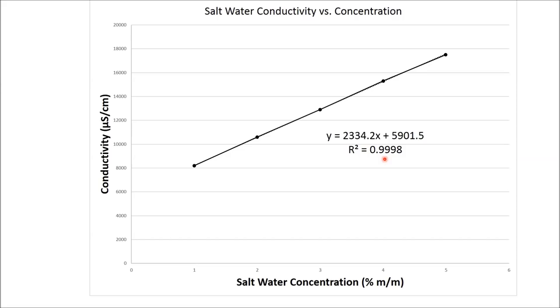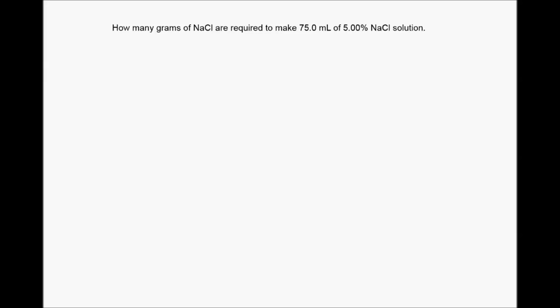A calibration curve can be used because we can easily measure the conductivity of an unknown by inserting the conductivity probe. That conductivity is a y-value — plug it into the equation of the line and solve for x to get the concentration. This allows us to determine the concentration of an unknown by simply measuring its conductivity. Before generating the calibration curve, we first need to make a series of solutions. The first solution is a 5% NaCl solution starting from solid NaCl. We'll determine how much solid NaCl to use to make 75 mL of the 5% solution.